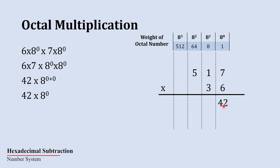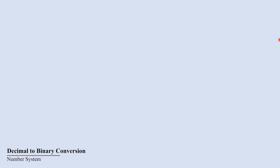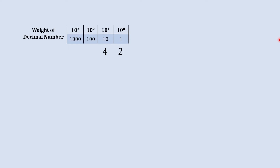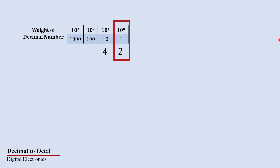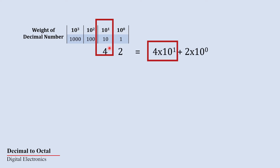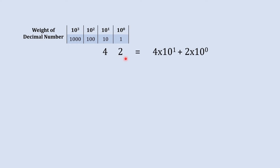This number is a decimal number and we first need to convert it into an octal number before we can proceed further. So let's understand this conversion quickly. 42 in decimal means 4 and 2 each carry their positional weight.